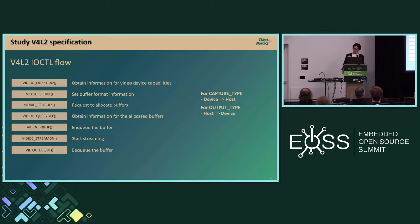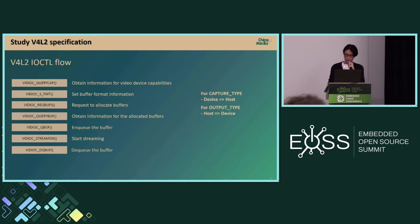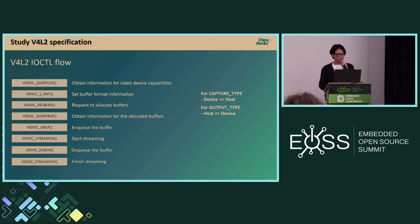The host queues the buffer, transferring ownership to the V4L2 driver. Stream On starts actual processing. Then the host dequeues the buffer — the V4L2 driver transfers the buffer back to the host once it's finished. The host keeps queuing and dequeuing buffers until all processing is complete. When finished, the host calls Stream Off to end streaming.